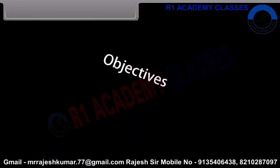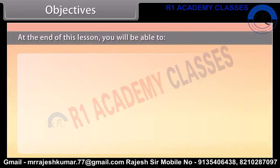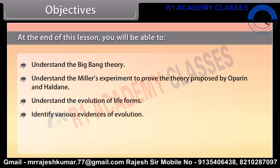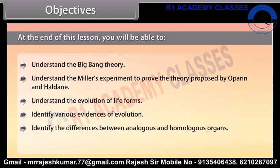Objectives. At the end of this lesson, you'll be able to: understand the Big Bang Theory; understand Miller's experiment to prove the theory proposed by Oparin and Haldane; understand the evolution of life forms; identify various evidences of evolution; identify the differences between analogous and homologous organs; and understand the concept of adaptive radiation.